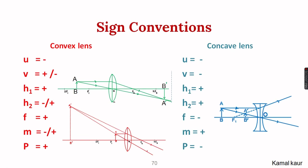We will now see the sign conventions for lenses, starting with a convex lens. For a convex lens, we have drawn six different diagrams by keeping the object at different positions. If the object is between infinity and the first principal focus, a real and inverted image is formed for all five cases. For the sixth position, when the object is between the optical center and the first principal focus, a different type of image with a different nature is formed. We will discuss these two conditions separately.